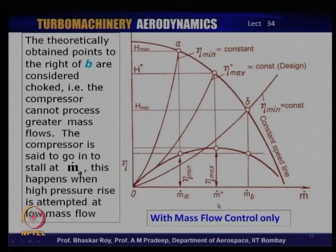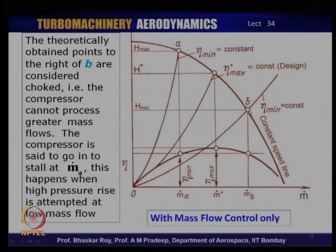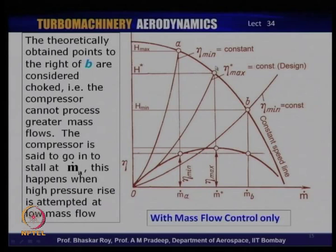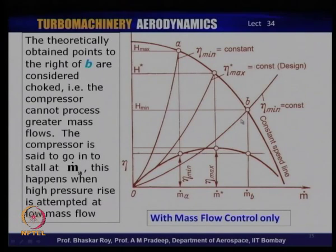With only a mass flow throttle control, the operation is along a speed line between point B — where the machine is choked at maximum mass flow — and point A — where minimum mass flow could lead to stall. Between A and B somewhere there is the maximum efficiency line, where you have the best efficiency of operation. Going away from that point, efficiency goes down: toward stall near A, and toward choking near B where efficiency is also somewhat lower. The maximum efficiency line decides the compressor operation in a natural manner.